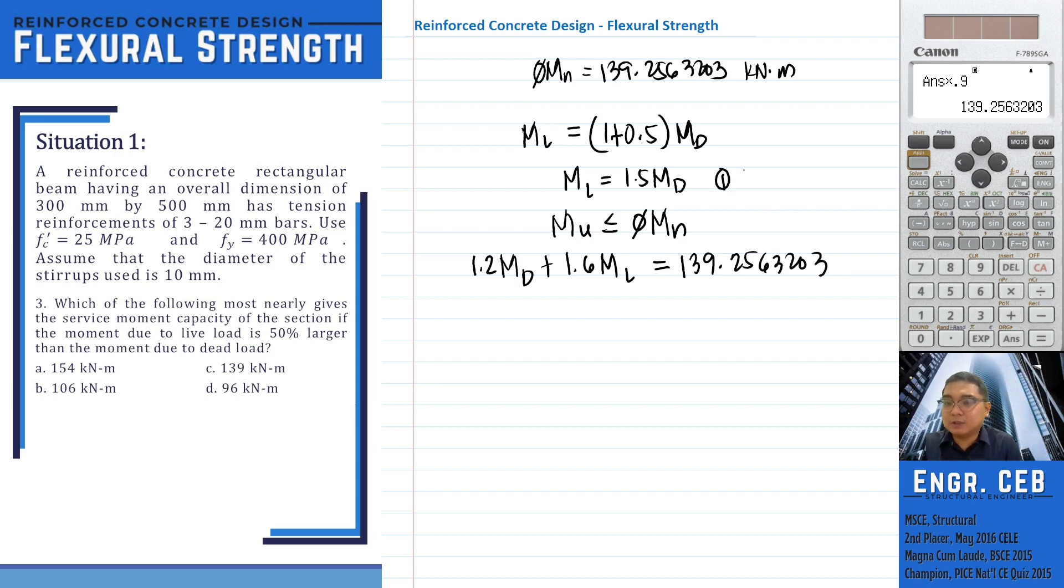We equate this to our design moment strength, which is 139.2563203. As you can see, we now have the first equation and then the second equation. We have two unknowns, M sub D and M sub L. So by solving this through algebra, we can solve for M sub D and M sub L.